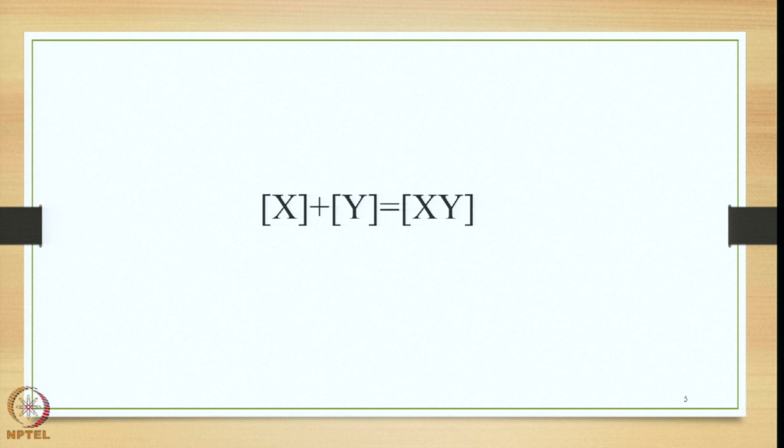The structure of the Bahubrihi Samasa can be briefly stated with the help of the following equation, where we have x plus y generating xy. X and y are both independent entities in terms of word form, meaning, and accent. The plus sign in between shows that both x and y are semantically interrelated. The speaker of Sanskrit decides to merge them together and generate an output xy, which is one unit.